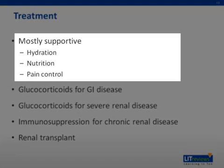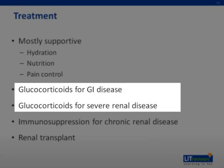Treatment is primarily supportive with maintenance of adequate hydration and nutrition and control of pain with analgesics, specifically non-steroidal anti-inflammatory drugs. The early use of glucocorticoids in HSP is controversial, though there are reports of its benefit in shortening the duration of abdominal symptoms and in preventing GI complications. There is no conclusive evidence that glucocorticoids can prevent the onset of HSP renal disease.